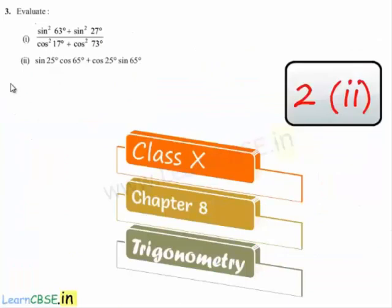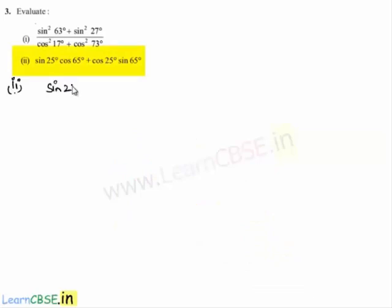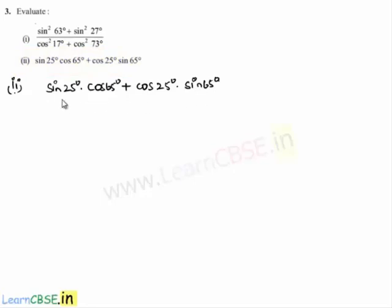Moving on to the second bit of the third problem. The given expression is sin25°·cos65° + cos25°·sin65°. Observing carefully, we can convert one of the terms so that the expression forms a known identity.